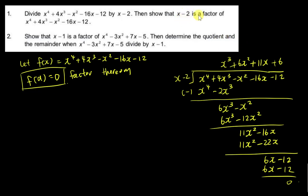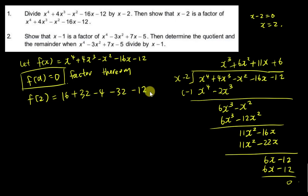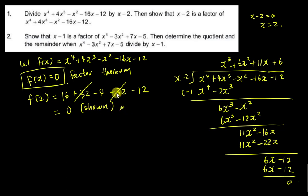To use the Factor Theorem for (x minus 2), don't substitute negative 2. Instead, think: x minus 2 equals 0, so x equals 2. I will compute f(2), but I will not write equals 0 straightaway, because the question asks me to show it. Substituting 2: 2 to the power of 4 is 16, plus 4 times 8 is 32, minus 4, minus 32, minus 12. You can see negative 32 and positive 32 cancel, and 16 minus 16 is 0. So I write 'shown.'